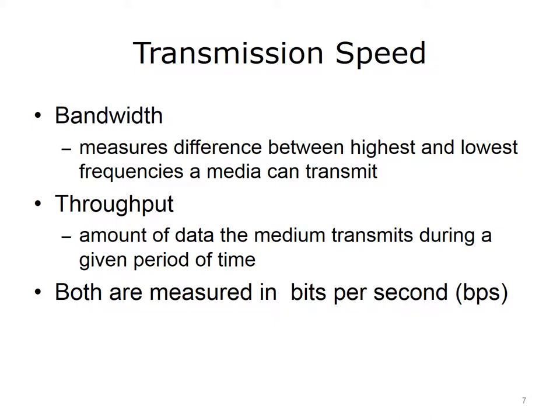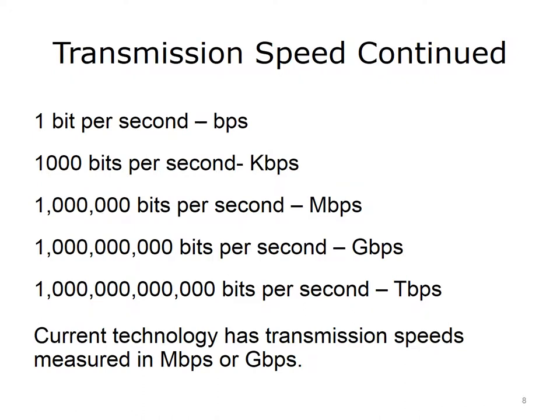An example is a four-lane highway. Bandwidth would be four vehicles, but if there is a wide vehicle taking up two lanes, the throughput would be just three vehicles. Bandwidth is measured in bits per second (BPS). The chart shows: 1 BPS, 1,000 BPS = KBPS, 1 million BPS = MBPS, 1 trillion BPS = TBPS. Current technology has transmission speeds measured in MBPS or GBPS.